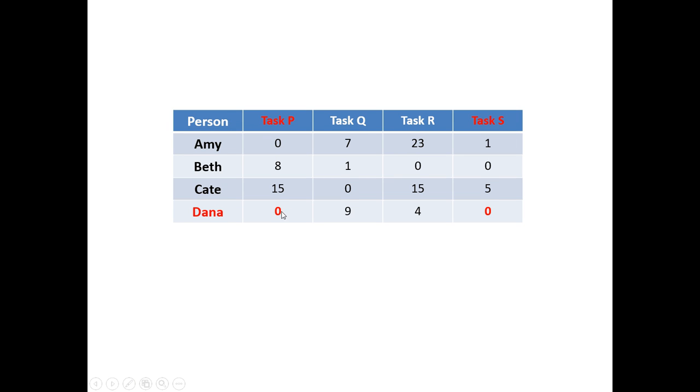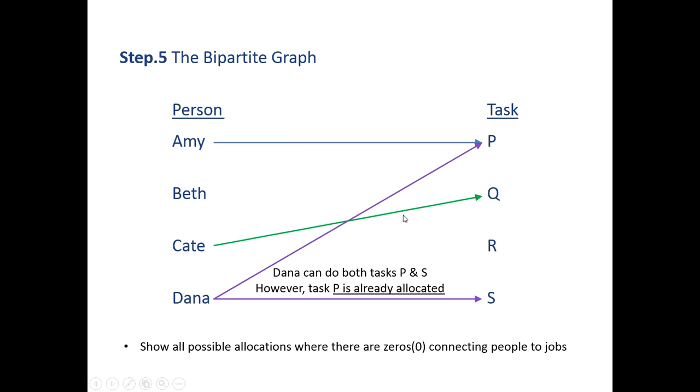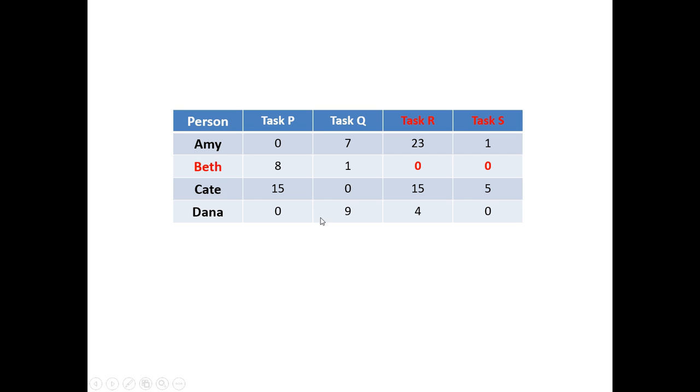We move on to Dana. Dana's got two options. She can do task P or task S because they've both got zeros in them. So Dana can do task P or task S. However, P has already been allocated to Amy because that was the only task she can do. So as a result, Dana has to complete task S. She's been allocated task S, which means Beth is the only one left to do task R.